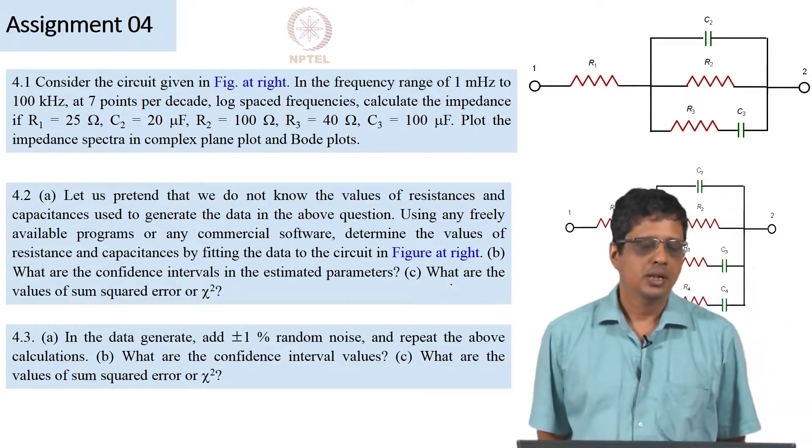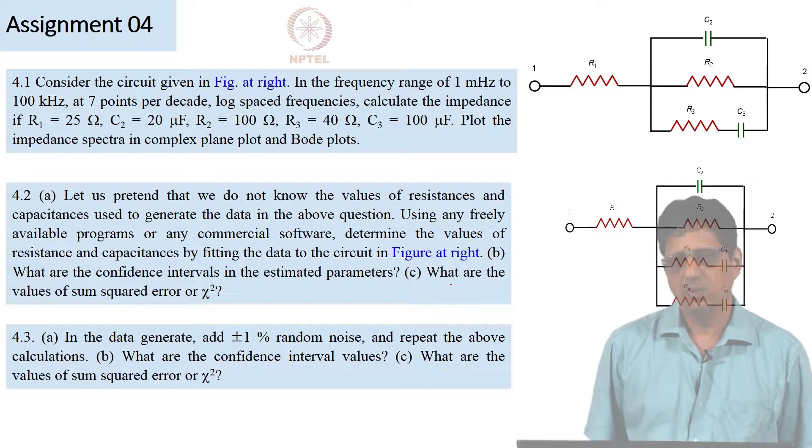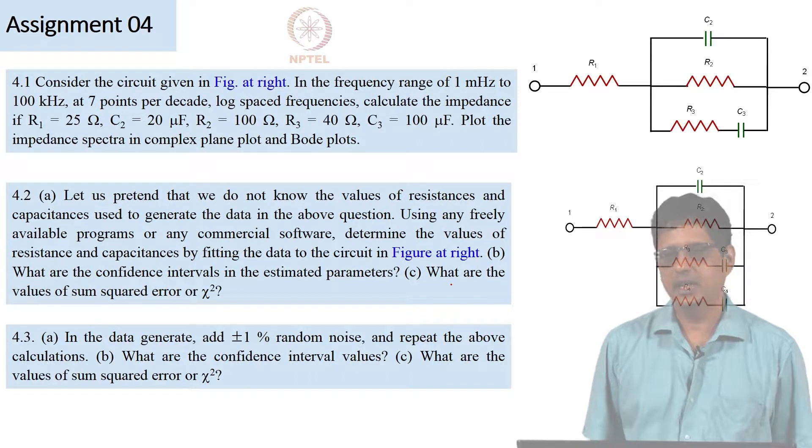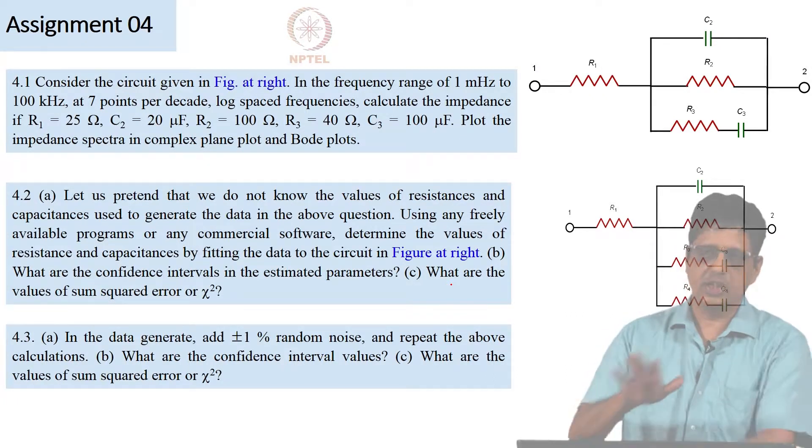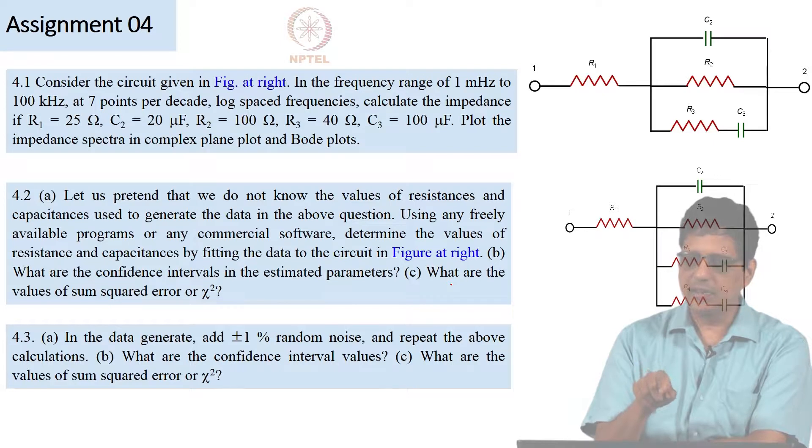This is the first part. Next, let us say this is experimentally obtained data. It is clean data, no noise, but we do not know which circuit it is, or actually we will first say we know what the circuit is. This is the circuit. Now I would like you to try and get the values of R1, C2, R2, R3, C3 using any commercial software or free software. So basically we pretend that we do not know the values of R1, R2, etc., and then find this.